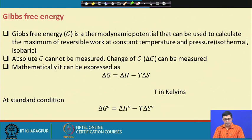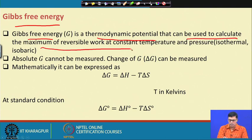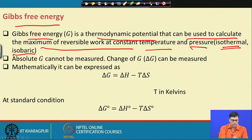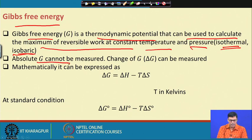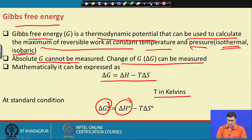Another very important term in thermodynamics is Gibbs free energy change. Gibbs free energy is the thermodynamic potential that can be used to calculate the maximum reversible work at constant temperature and pressure — that is, isothermal (constant temperature) and isobaric (constant pressure). The absolute value of G cannot be measured, but the change of free energy can be measured. Mathematically: ΔG = ΔH − T·ΔS, where T is measured in Kelvin. At standard conditions: ΔG° = ΔH° − T·ΔS°.